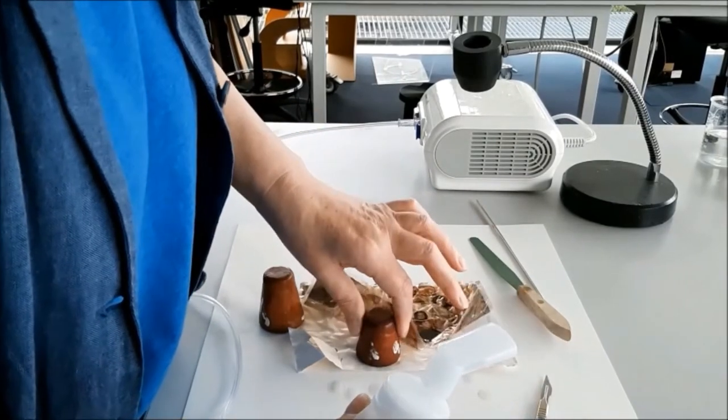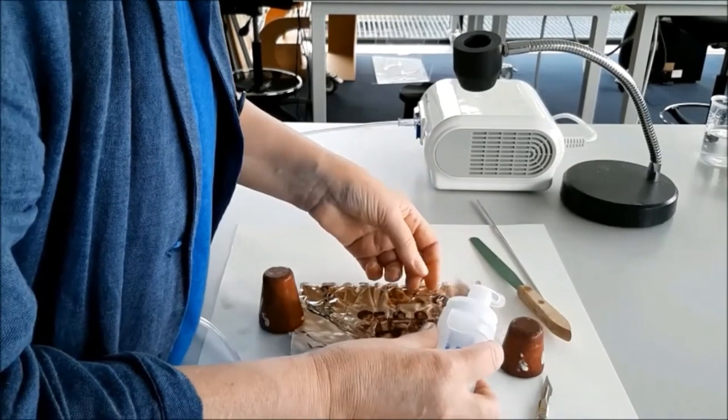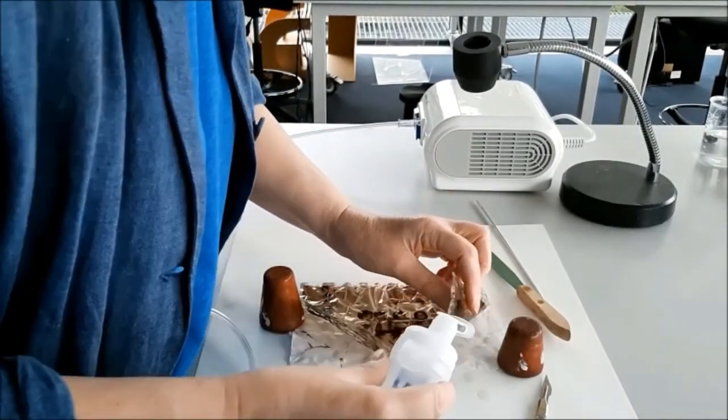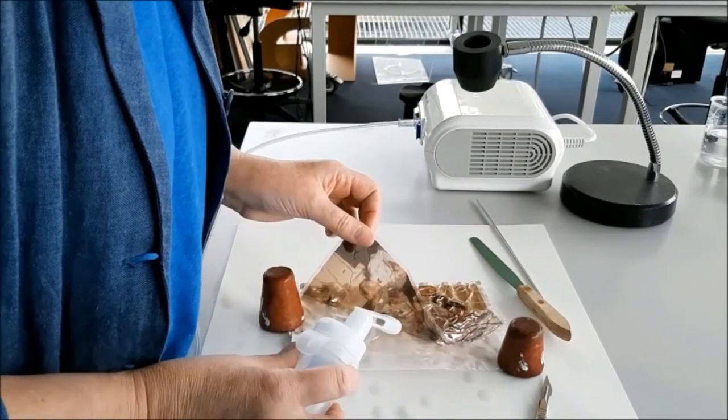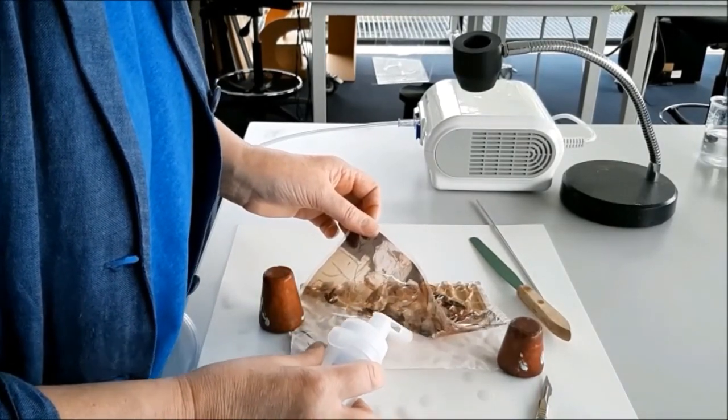This is because the outer layers have expanded and contracted with fluctuations in humidity. The middle layer does not have the same physical properties, and thus a disharmony is created between the layers causing irreversible damage.